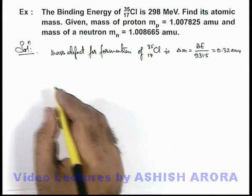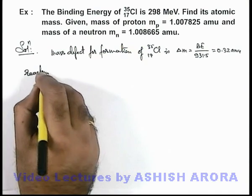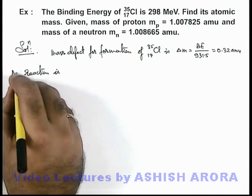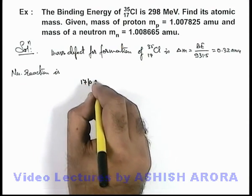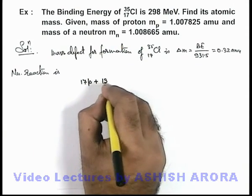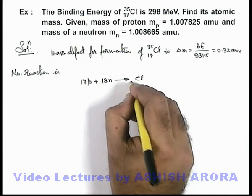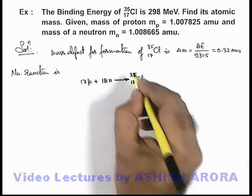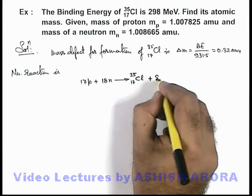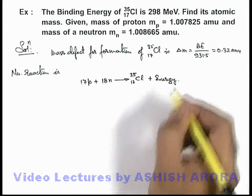Now in this situation we can write the nuclear reaction. In this situation, 17 protons will combine with 18 neutrons and will produce the chlorine nucleus with atomic number 17 and mass number 35, and will produce binding energy in the process.